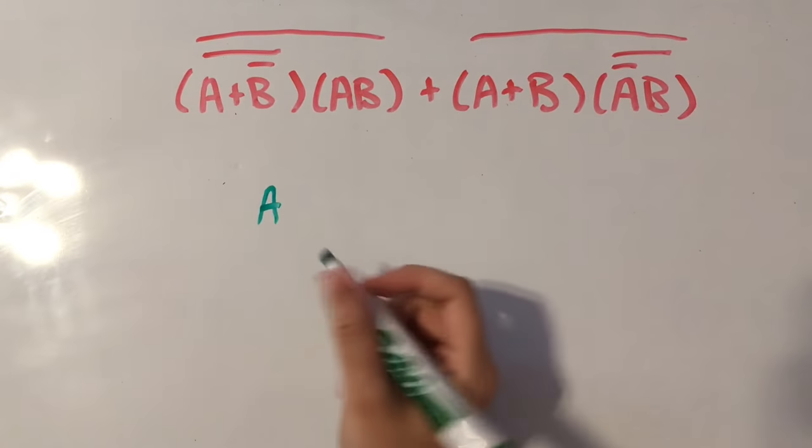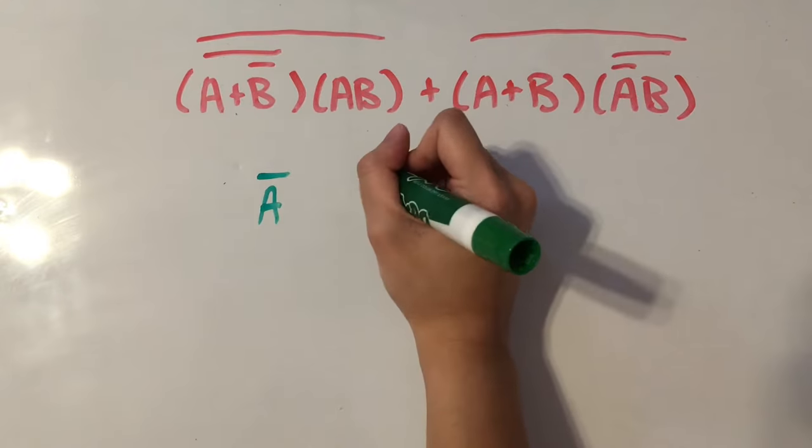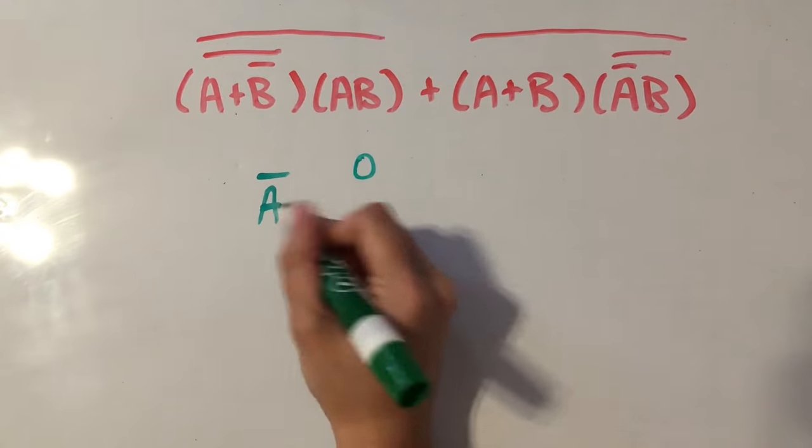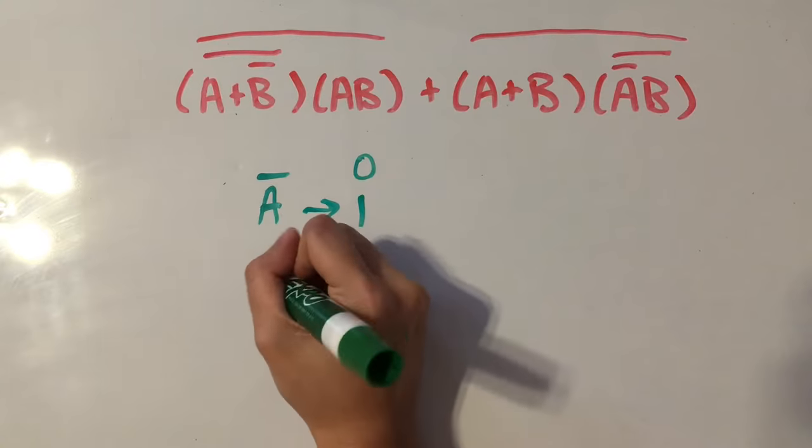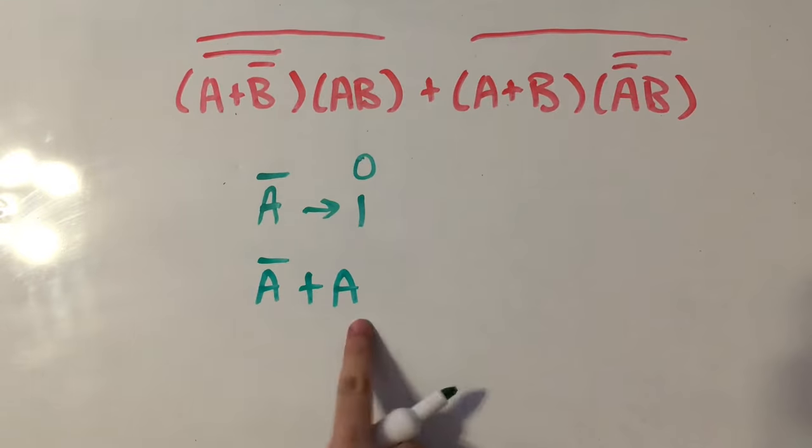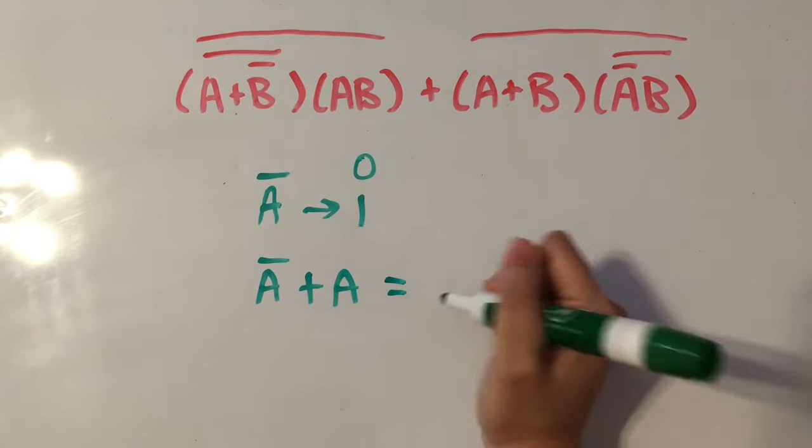So we have a variable A, and if we have a line over it, that means NOT A. So if A was 0, then NOT A would be 1. So if we have NOT A plus A, one of these will have to be 0 and one will have to be 1. So NOT A plus A, or any variable for that instance, is going to end up as 1.